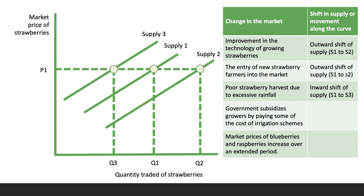The fourth change: the government subsidizes growers by paying some of the cost — perhaps of irrigation schemes or installing polytunnels. Think about the impact on costs: if costs go up, supply shifts to the left; if costs go down, supply shifts to the right.